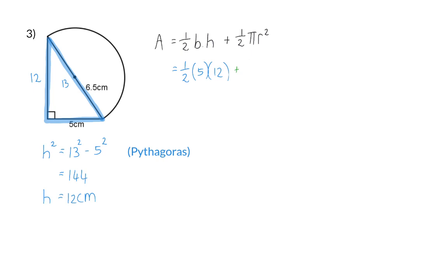To this, we are going to add the semicircle. That is a half times pi times the radius of the circle, which is 6 and a half squared. The area of this shape will then be 96.37 centimeters squared.